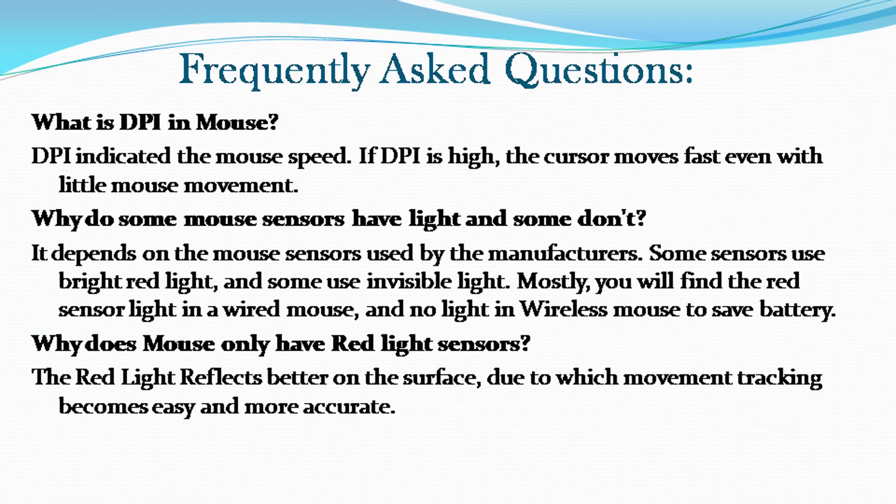What is DPI in mouse? DPI indicates the mouse speed. If DPI is high, the cursor moves fast even with little mouse movement. Why do some mouse sensors have light and some don't? It depends on the sensors used by the manufacturers. Some sensors use bright red light and some use invisible light. Mostly, you will find the red sensor light in a wired mouse and no light in wireless mouse to save battery.